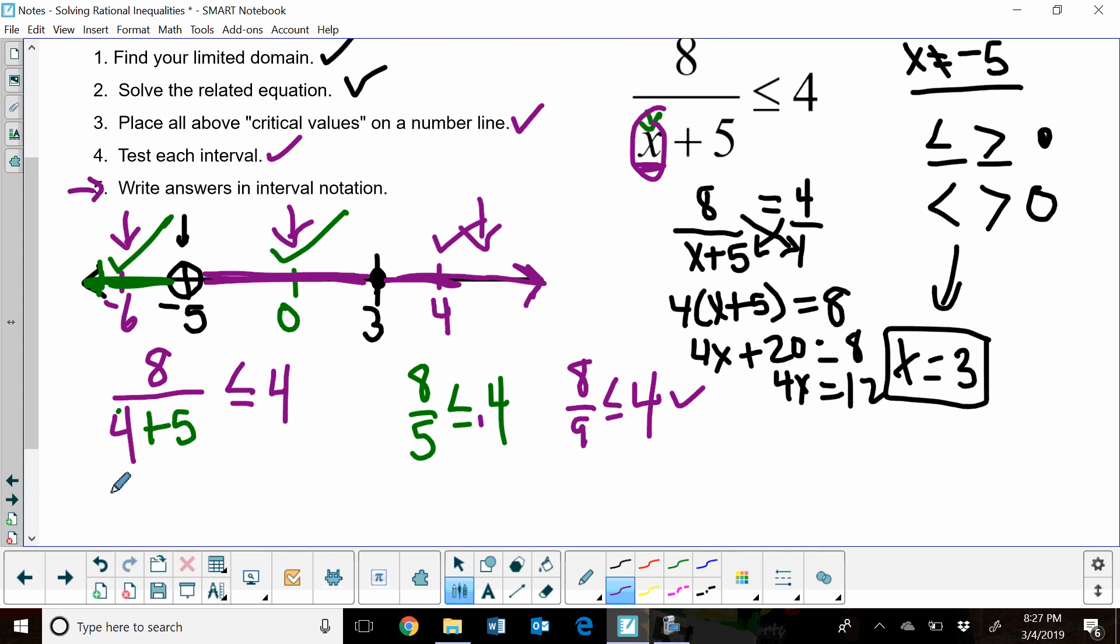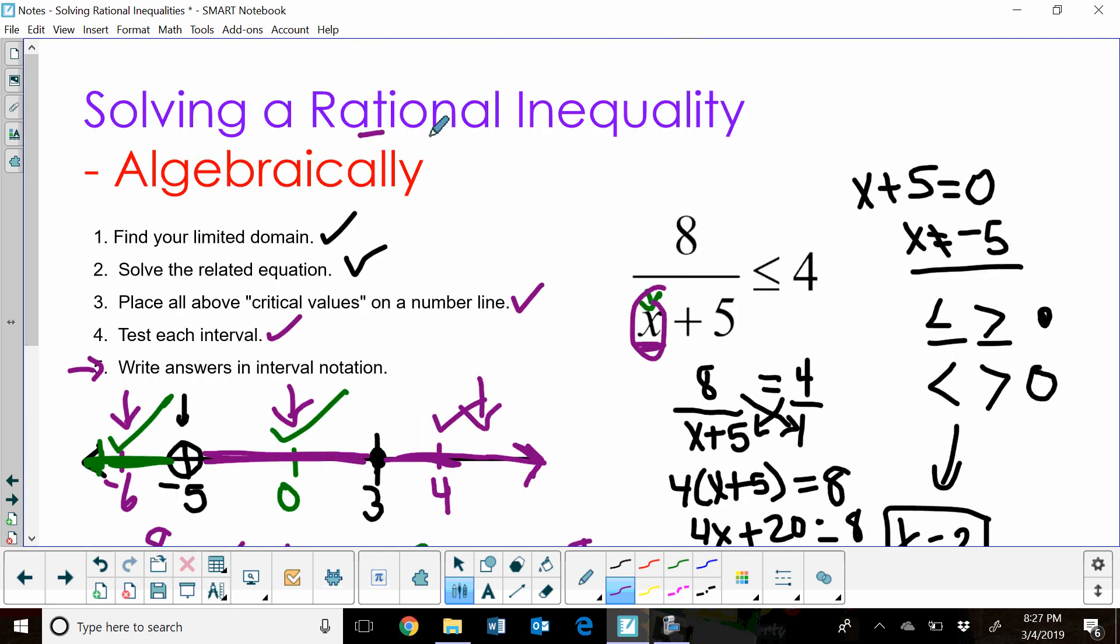So that's going to be from negative infinity up to negative 5, but I'm not going to include negative 5. So in interval notation, I just use parentheses. Then I'm going to join or make that the union with this region from negative 5 to infinity. So that's going to be negative 5 and everything greater than negative 5. And boom, there's my solution. And that's how you solve your rational inequality algebraically. Hope this video was helpful.